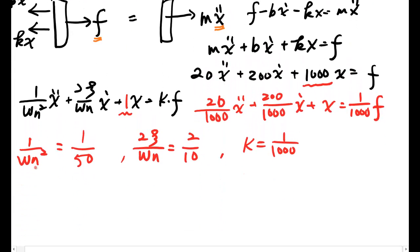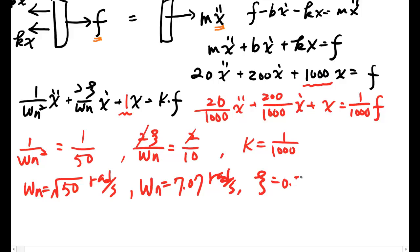So the system parameters should be: omega n should be square root of 50 in radians per second. So omega n should be 7.07 radians per second, and damping ratio should be 0.7, which has no unit.